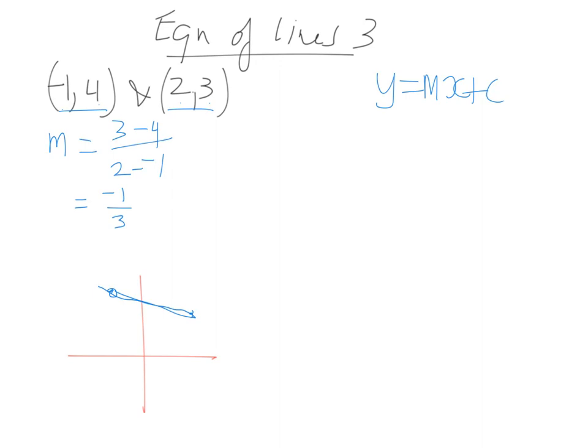And once again, I'm going to choose one of these points. I'm going to work with this and substitute into this. So m equals negative 1 over 3, x equals 2, and y equals 3. I've chosen that because I don't want to deal with a negative number. I'm going to have one here anyway, it doesn't matter.